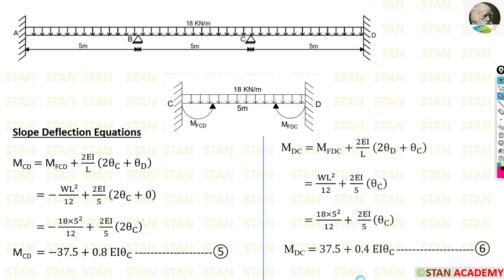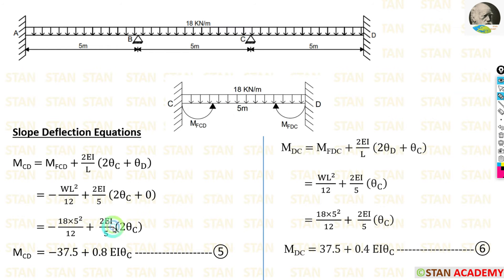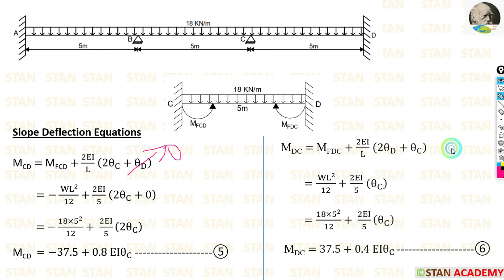Now we make the slope deflection equations for span CD. The same UDL applies, so the fixed end moment formulas are the same. M_CD is negative (anti-clockwise) and M_DC is positive (clockwise). With W = 18 and L = 5, we apply the values. Since D is a fixed support, θD = 0 and is removed from both equations, giving us two slope deflection equations.